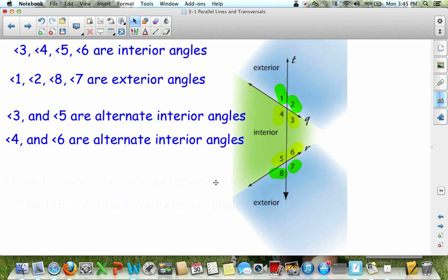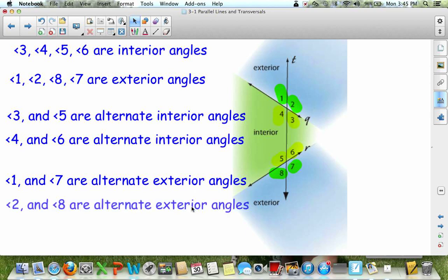Okay, the next one. 1 and 7 are alternate exterior angles. Can you guess what the other alternate exterior angles are? You guessed it. 2 and 8 are also alternate exterior angles.